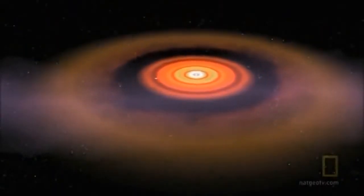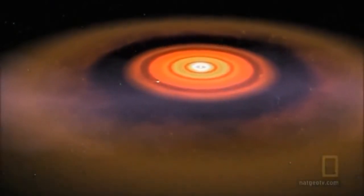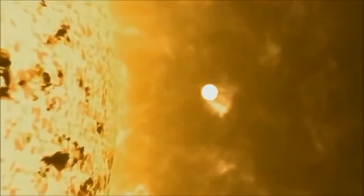These planets migrate through the disk until they find a stable orbit. This is why Bellerophon is so close to its parent star.